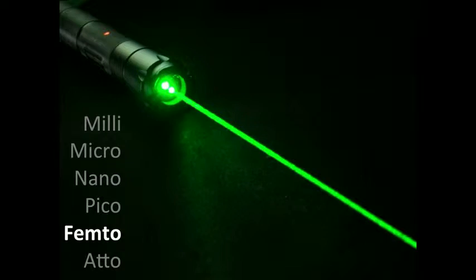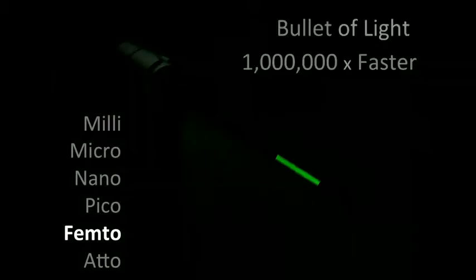Now, if I take a laser pointer and turn it on and off in one trillionth of a second, which is several femtoseconds, I'll create a packet of photons barely a millimeter wide. And that packet of photons — that bullet — will travel at the speed of light, a million times faster than an ordinary bullet.